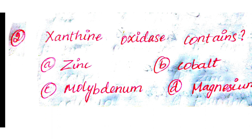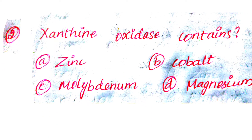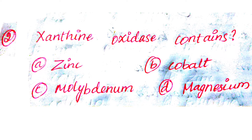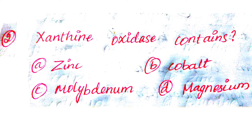Question number 2: Xanthine oxidase contains. Option A: Zinc. Option B: Cobalt. Option C: Molybdenum. Option D: Magnesium.